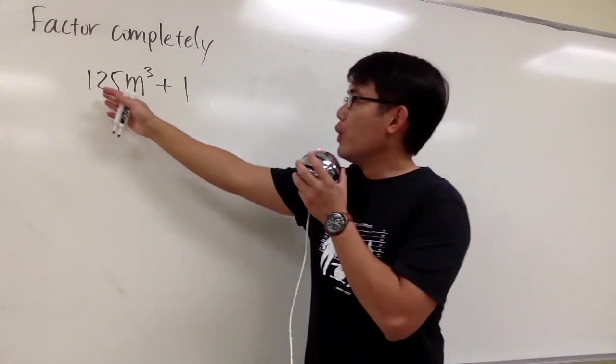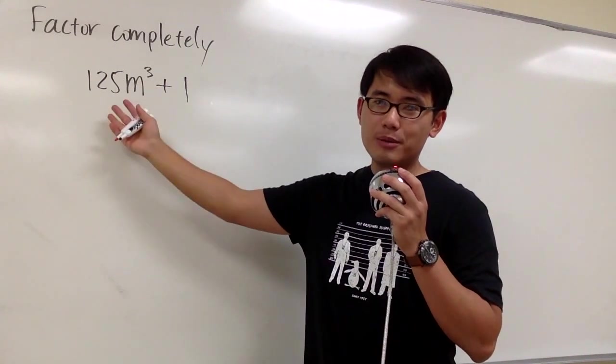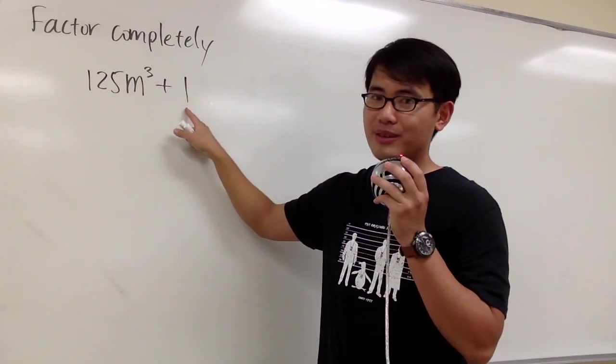We are going to factor 125m to the third power plus 1. First, we notice that there's no common factor, and second, here we have two terms.